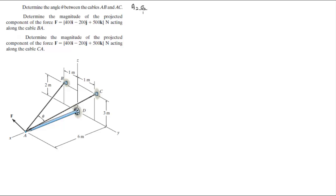So A is equal to 6I plus 0J plus 0K, B is equal to 0I minus 1J plus 2K, C is equal to 0I plus 1J plus 3K.